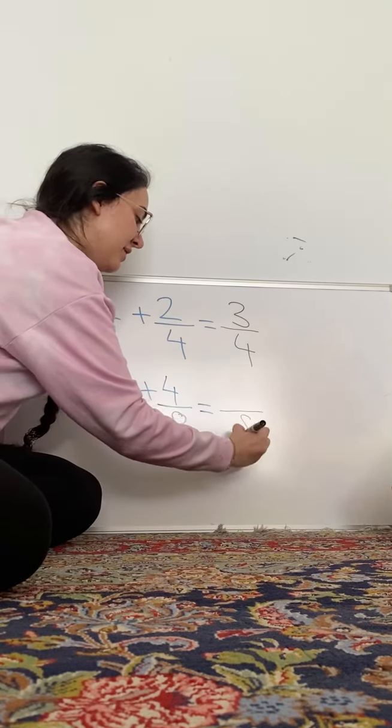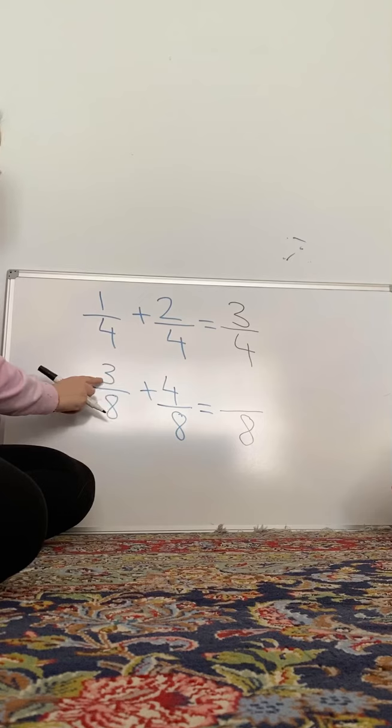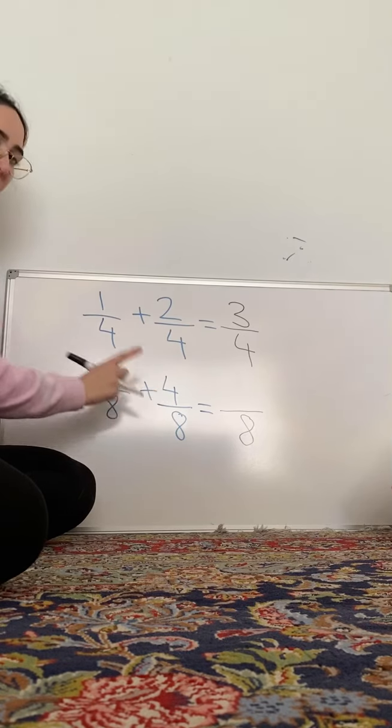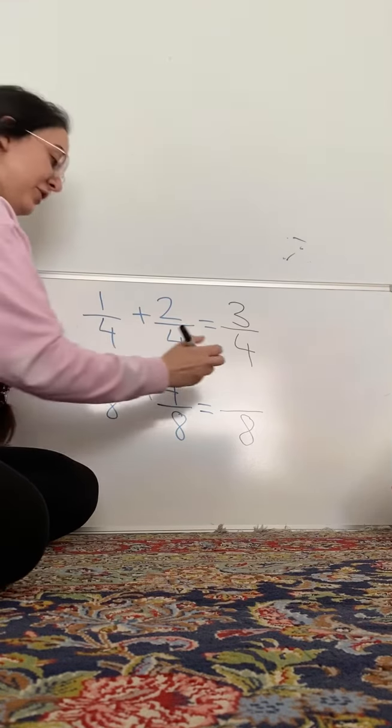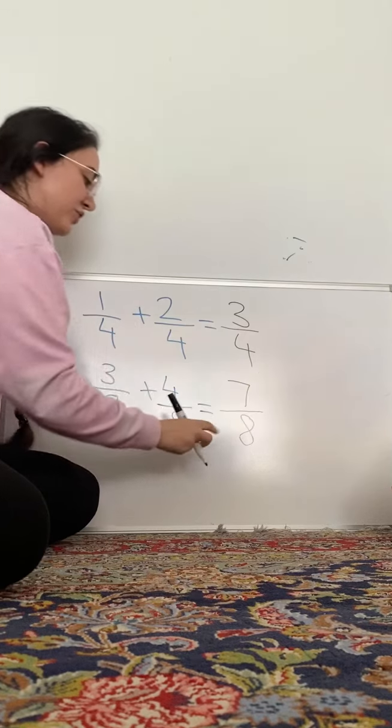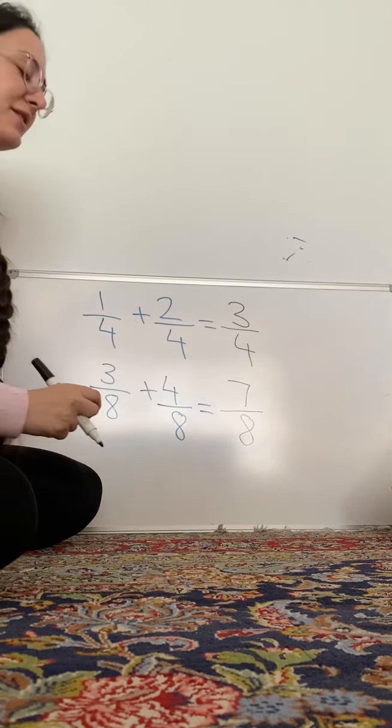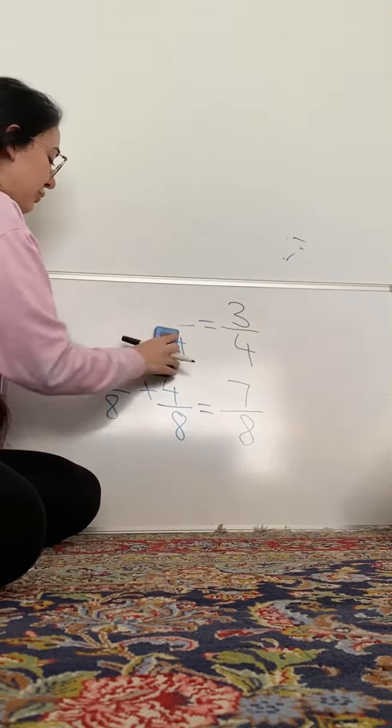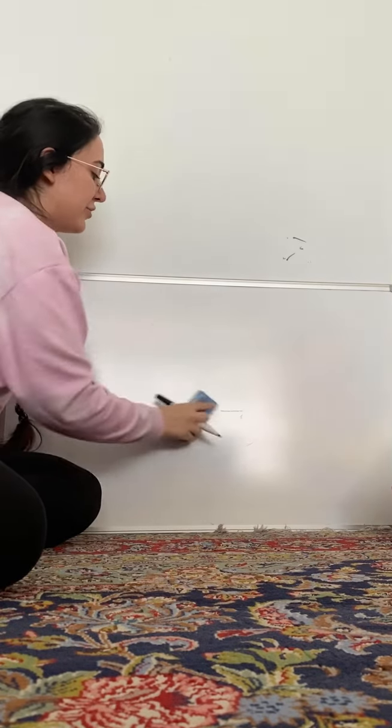The next question. Remember, denominator always stays the same. So, we'll draw a line there, and then 8. 3 plus 4 is, good, it is 7. So, our answer is 7 eighths.